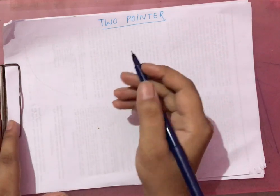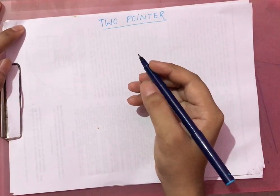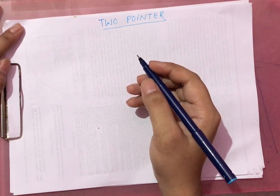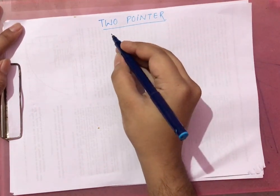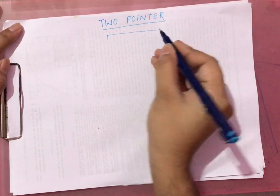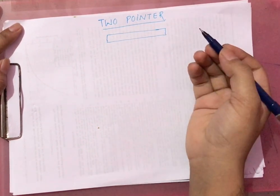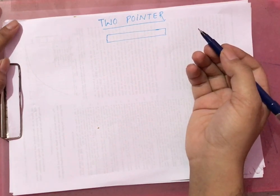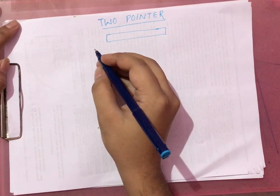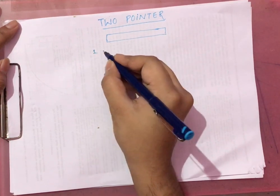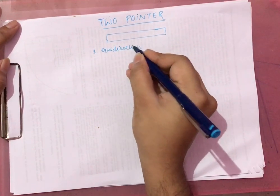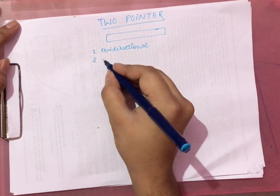Today we will learn about two pointers. Two pointer is generally a search algorithm where we search an array or a data structure that is in some order. We put two pointers to solve the problem. There are two ways to place these pointers: one is equidirectional and the other is opposite direction.